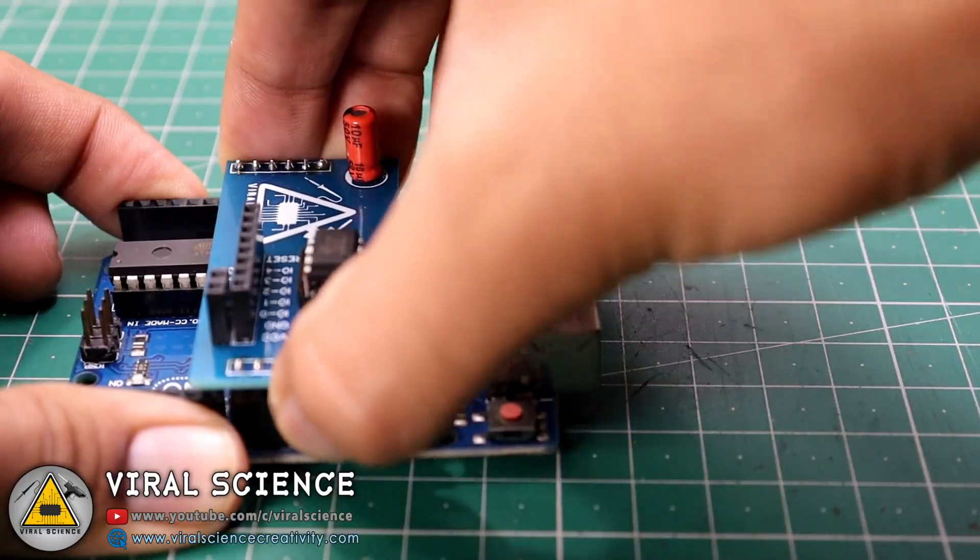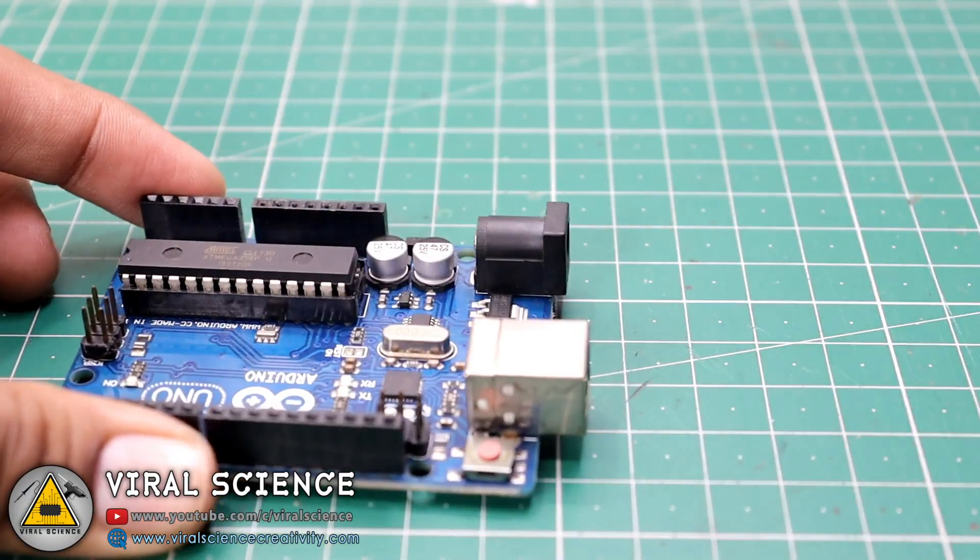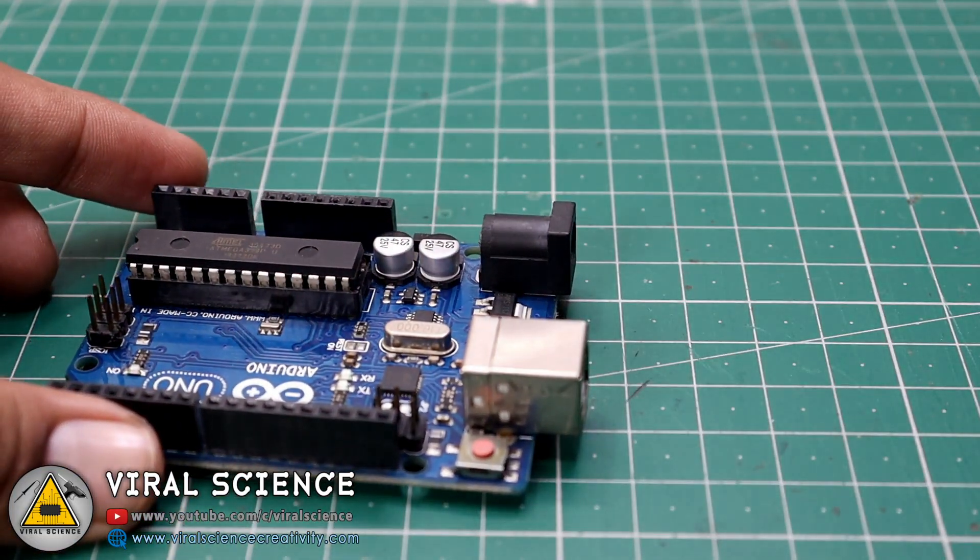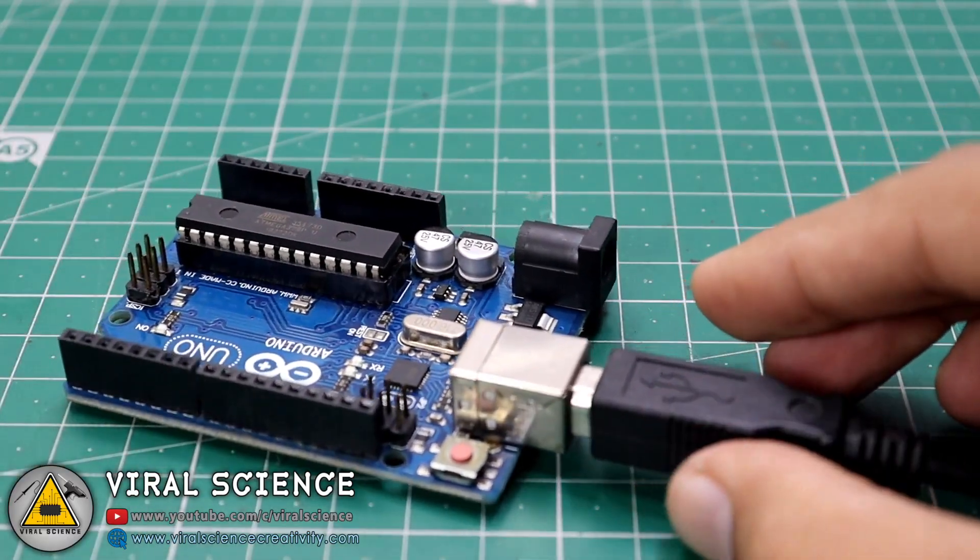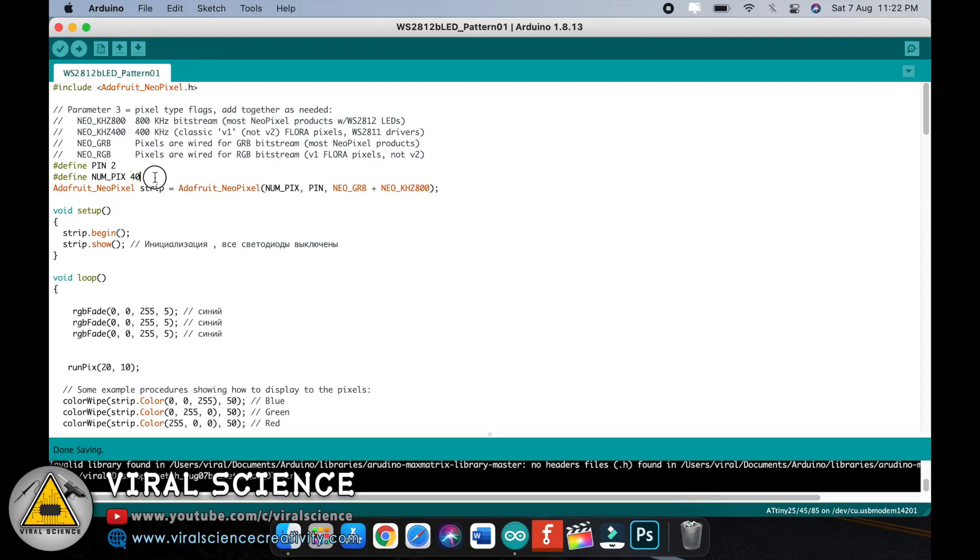Before programming, remove the PCB board from the Arduino Uno and connect it to the computer. Open the code - pin 2 is defined for the LED strip, and you can define how many LEDs are in your strip. In my case, there are 40 LEDs.